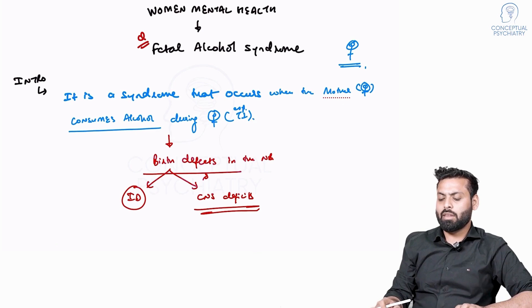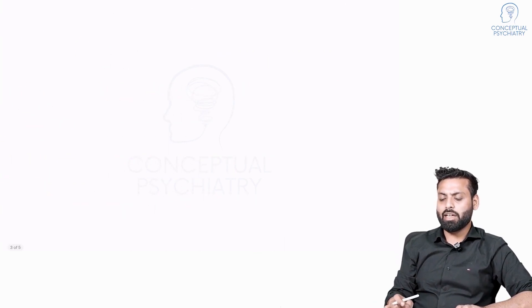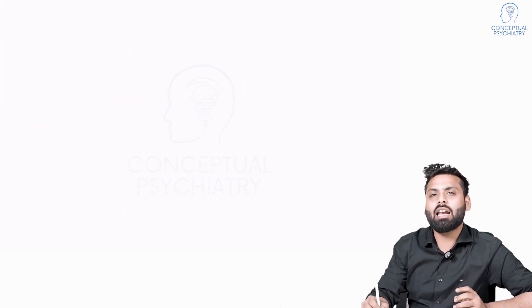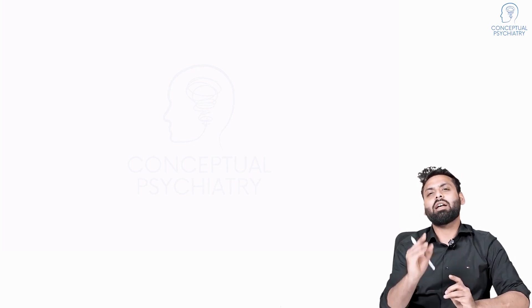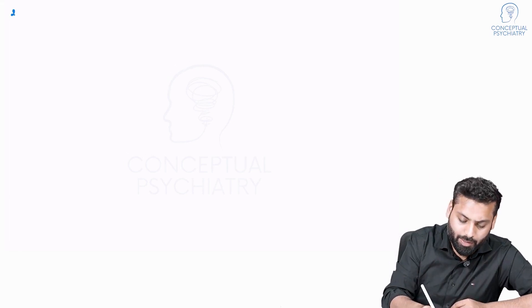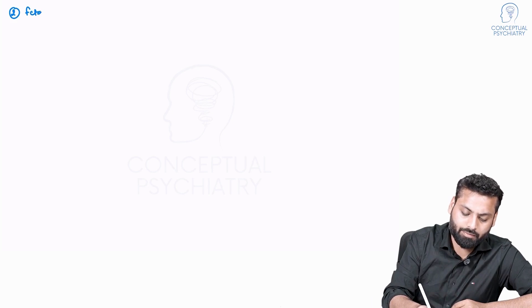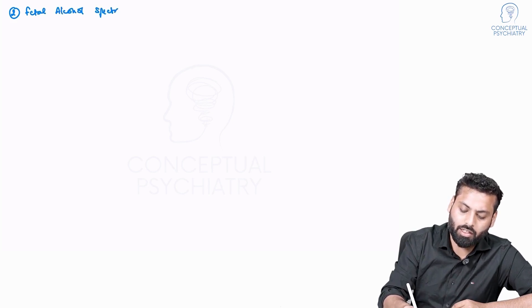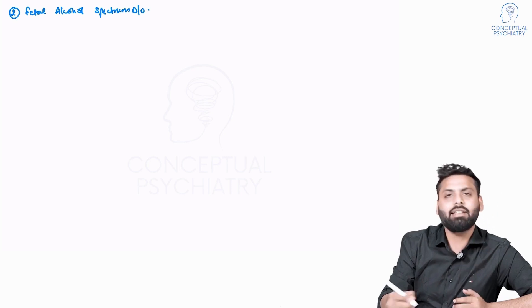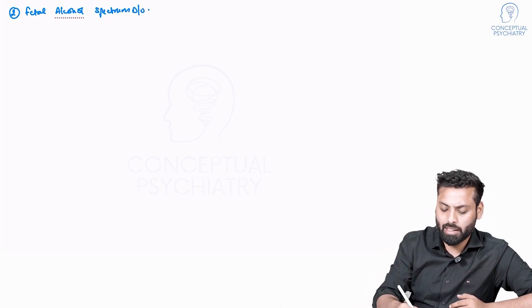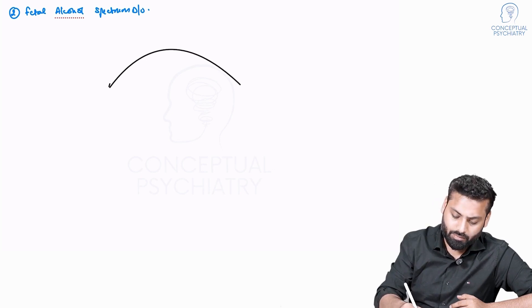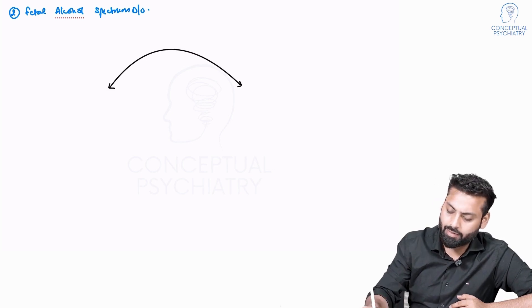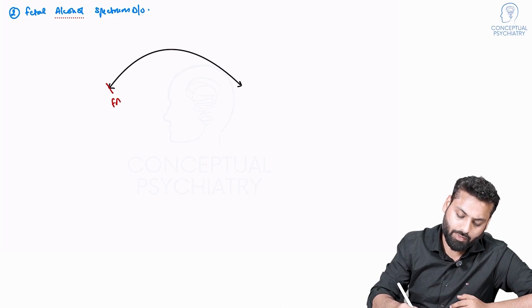What we need to take care of is that fetal alcohol syndrome is not just a single entity — it is actually a spectrum: fetal alcohol spectrum disorder. It is part of the spectrum, and there could be multiple manifestations. On one end we have FAS, fetal alcohol syndrome.